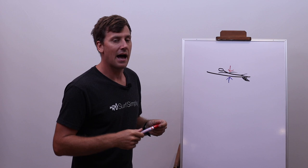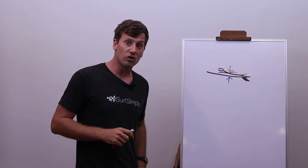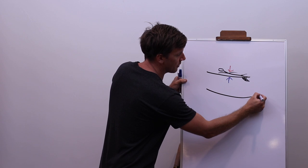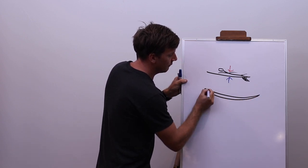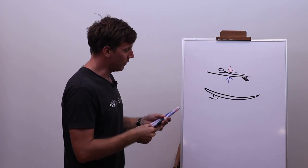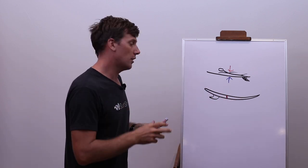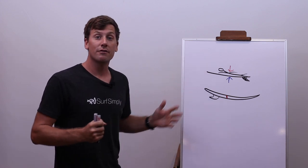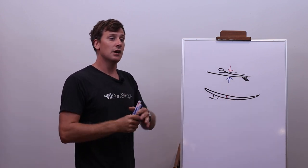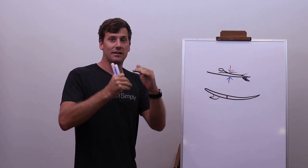They actually did an experiment on this at California State University. They had Firewire shape three boards that were basically identical—all Firewire Dominators—but they moved the thickest part of the board forwards and backwards by about an inch, two and a half centimeters. What they found was it made no difference to people's paddling, because all the surfers adjusted their body position to counterbalance it and make the board feel correct for them.